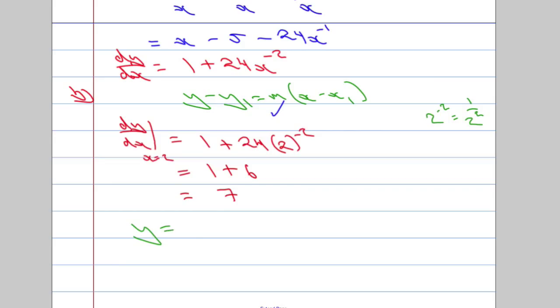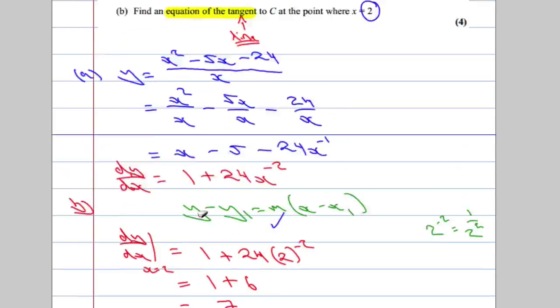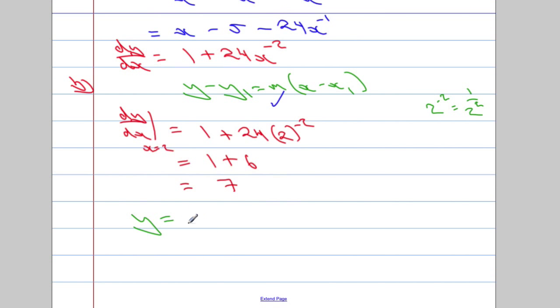So, y is going to be equal to... Now, we said x is 3. We want y when... Sorry, when x is 2. We want y when x is 2. So, y is going to equal 2 minus 5 minus 24 times 2 to the power of negative 1. Which is going to be 2 subtract 5 is negative 3. Take away, and 24 divided by 2 is going to give us 12. So, using the laws of indices here, which is going to give us negative 15. Right, so I know the value of x, I know the value of y. In other words, I now know the point. x1, y1 is going to be equal to 2, negative 15.